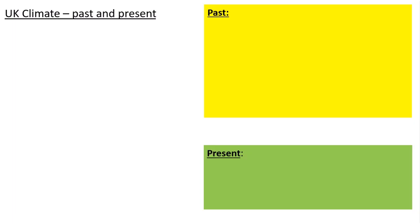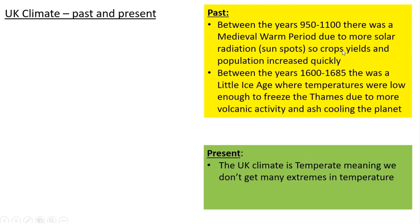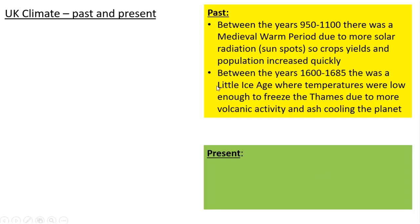Focusing on the UK's climate in terms of past and present: the UK's climate has changed quite a bit. We had something called the medieval warm period, which occurred around 950 to 1100 AD, thought to be due to more solar radiation and more sunspots. That helped boost population because crop yields rose. Around 500 years afterwards, we had something called the Little Ice Age — not a full-blown glaciated period, but temperatures were lower than usual, enough to actually freeze the River Thames. That was thought to be due to more volcanic activity, where ash cooled the planet down.